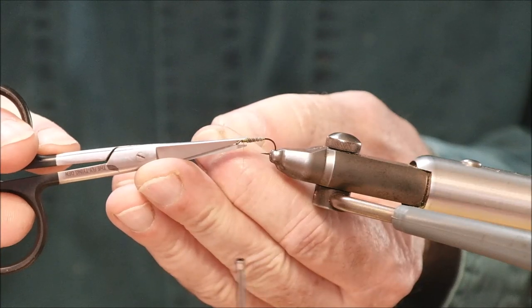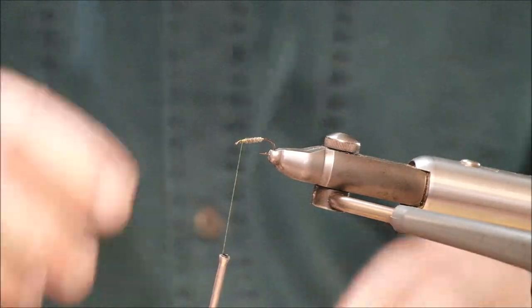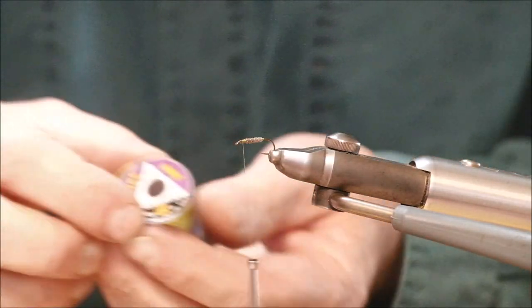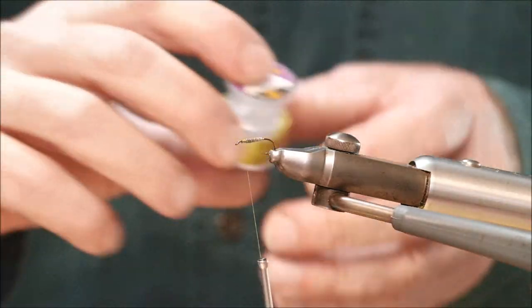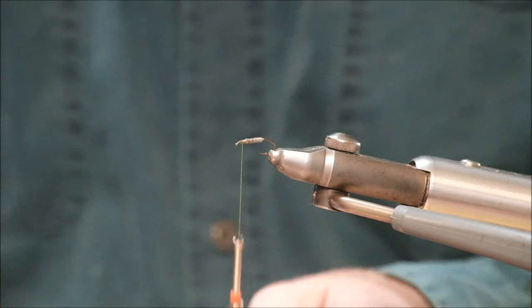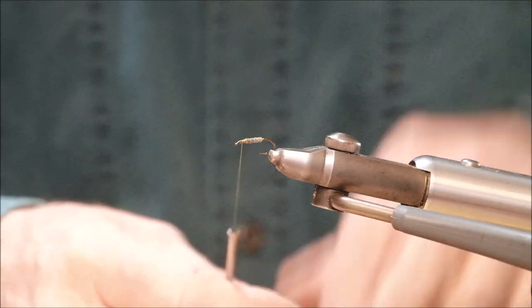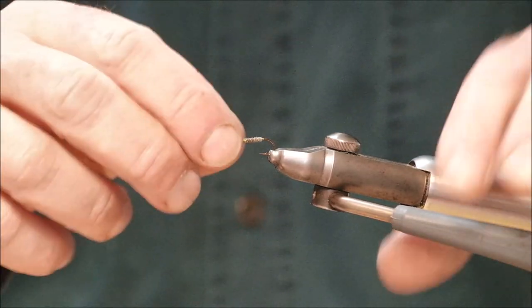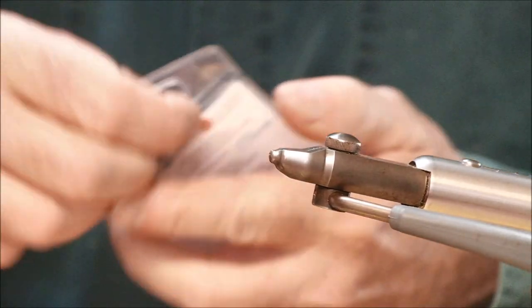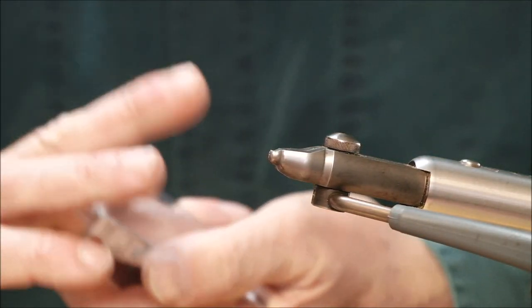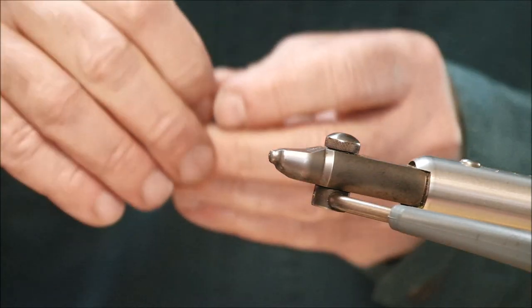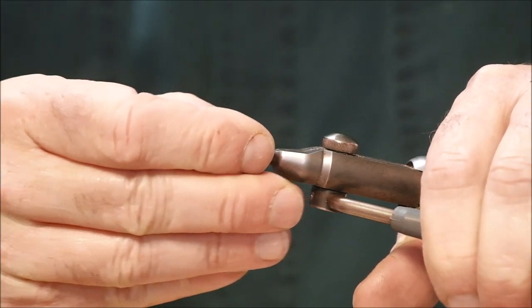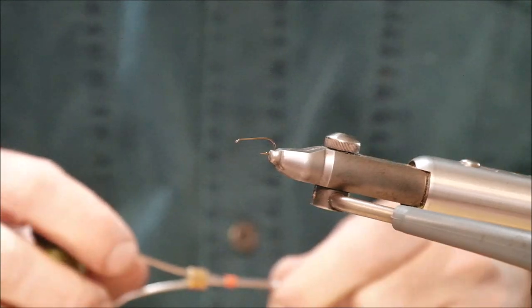Now the wire rib. Because I put the hurl on in that rotation, I'm going to put the wire rib in the opposite rotation in open turns. Because I brought it in the direction opposite, that will reinforce the heron hurl and make it virtually indestructible. So that's a feather fiber body, and it's ribbed with, in this case, a golden olive wire. That's two types of body so far.